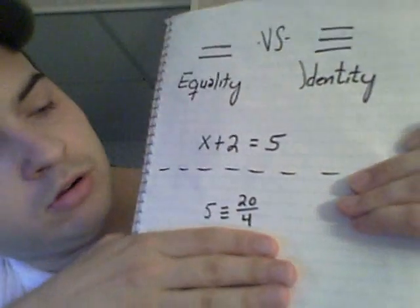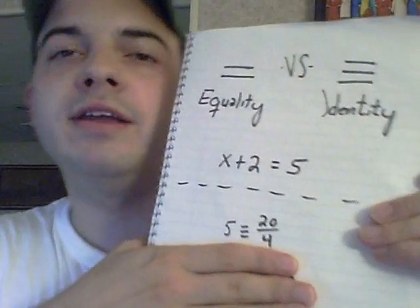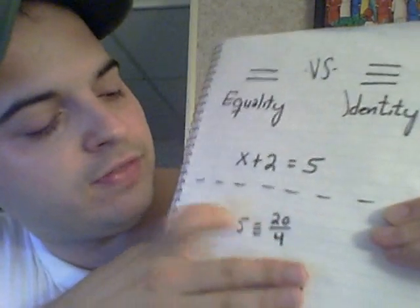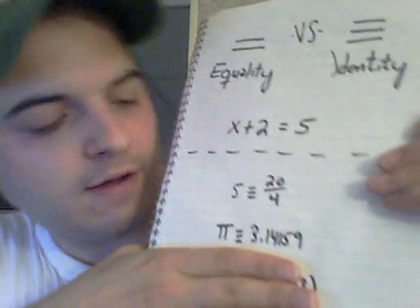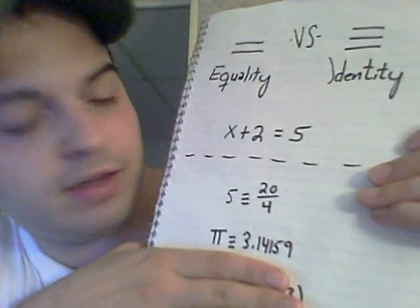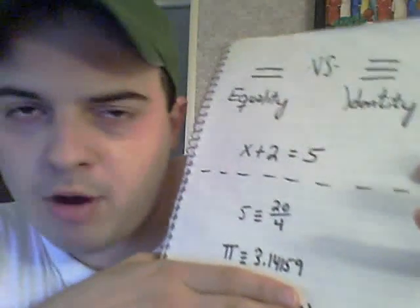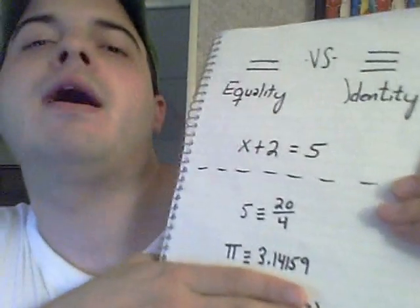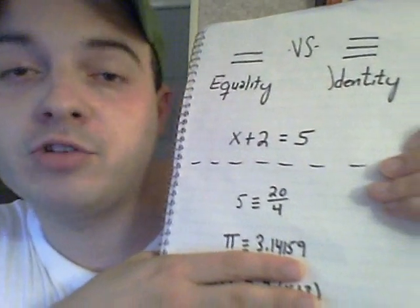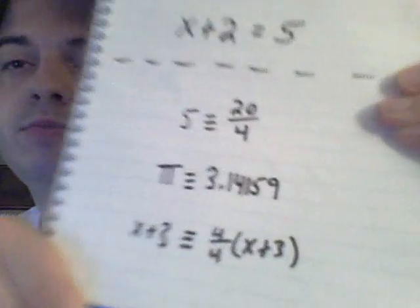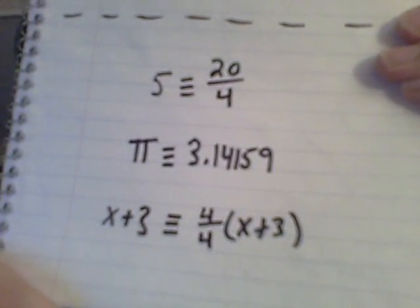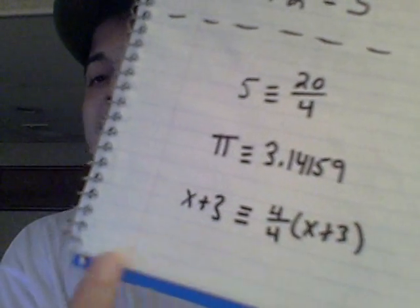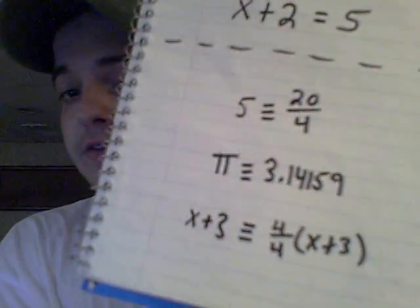Here are some examples of identities. Five equals twenty over four — these look uninteresting but they are the same thing in different forms. Another example: defining pi as 3.14159 — this means that pi is that value; these are not two different things being set equal. One last example: the function x plus three multiplied by four over four gives you one function and another function that are identical for all values of x. In this case, you could take the derivative of both sides and be fine.